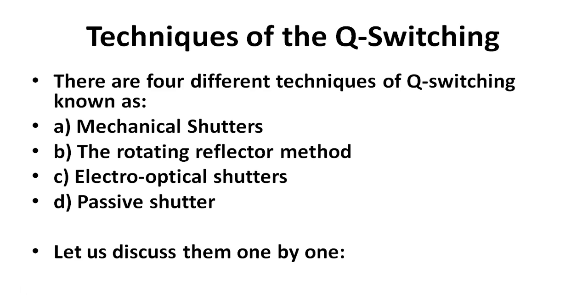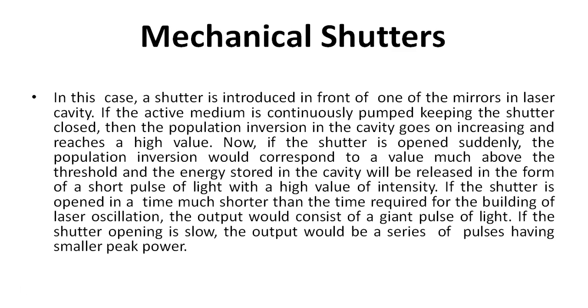There are four different techniques of Q-switching: mechanical shutters, the rotating reflector method, electro-optical shutters, and passive shutter. Let us discuss them one by one.